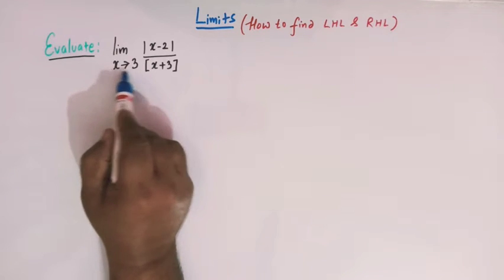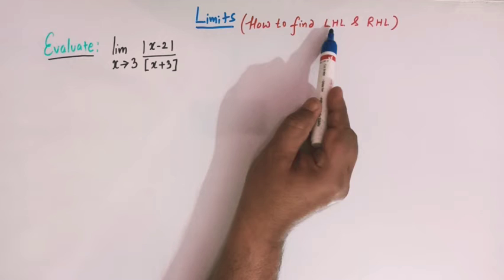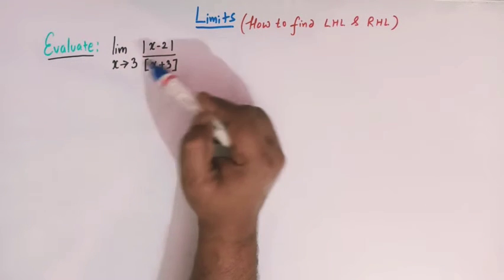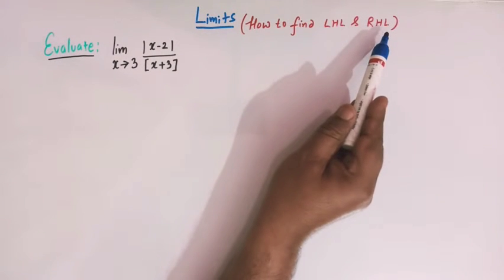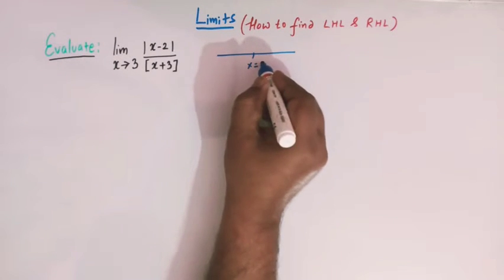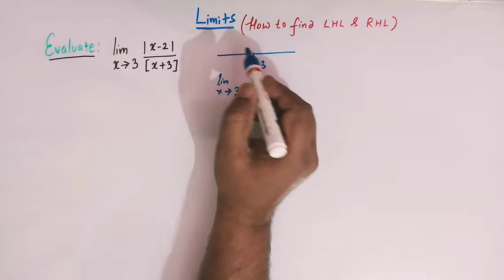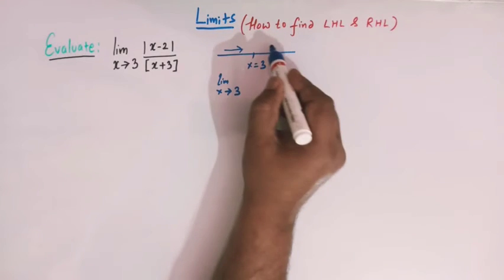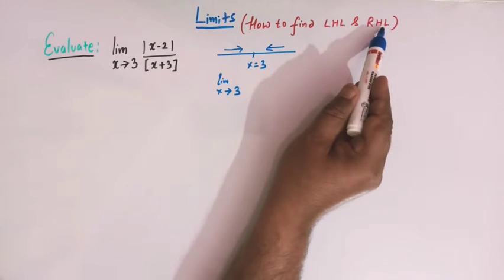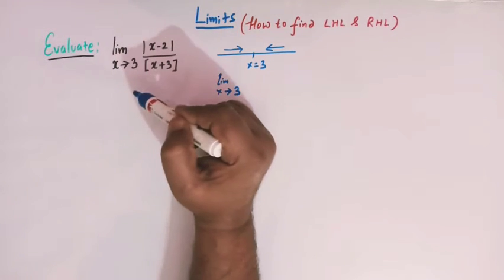To find the limit as x tends to 3, we have to find the left hand limit and the right hand limit. We know that the limit of a function exists at a particular point if the left hand limit and the right hand limit both exist, are finite, and are equal. When x tends to 3, it approaches from either left or right. If both limits are equal, then we say that the limit x tends to 3 exists.